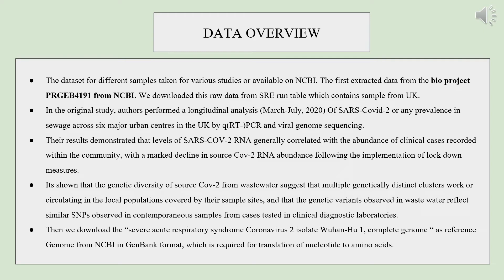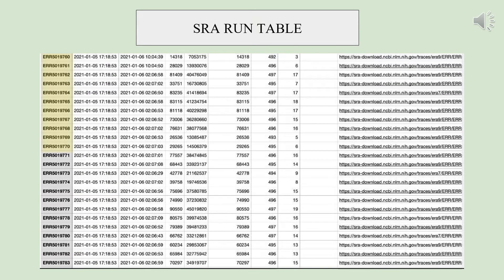For the data overview, the dataset was made available on NCBI and downloaded from the SRA run table. Sample analysis was performed on sewage from across six major cities of the UK, showing genetic diversity. Genetic variants in wastewater reflect similar SNPs. The complete genome of SARS-CoV-2 as a reference genome was downloaded from NCBI in GenBank to study translation of nucleotides to amino acids.